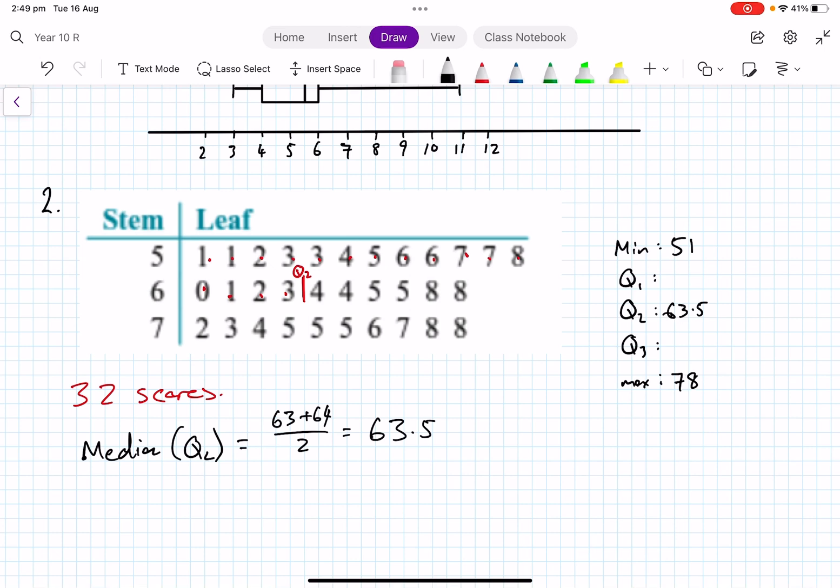All right, now I've got my lower 16 scores. As I said, I've got 16, so I've got to count eight: one, two, three, four, five, six, seven, eight. And then the ninth is also 56. This is where my Q1 goes. That's pretty obvious, that's 56, so I'm going to put that there.